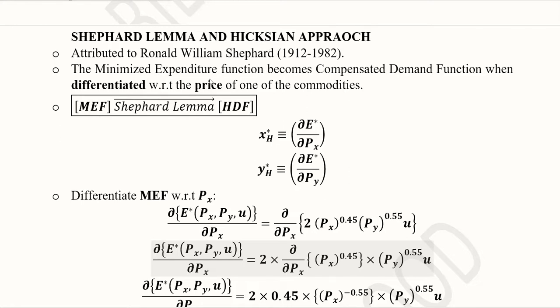However, the formula is simpler because in this case we just have to differentiate once whereas in Roy's identity, we had to find out two derivatives.